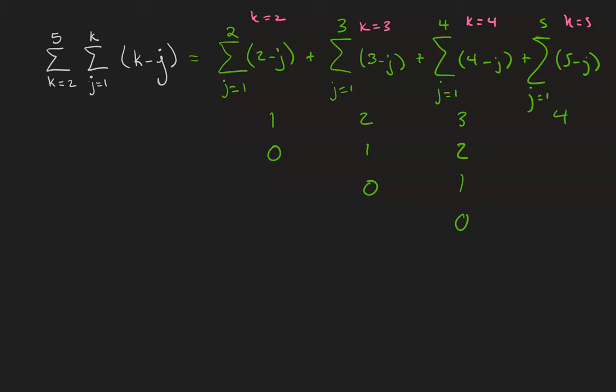5 minus 1 is 4, 5 minus 2 is 3, 5 minus 3 is 2, 5 minus 4 is 1, and 5 minus 5 is 0.